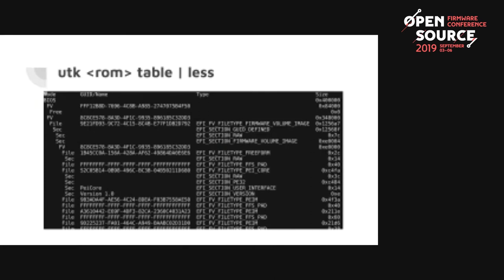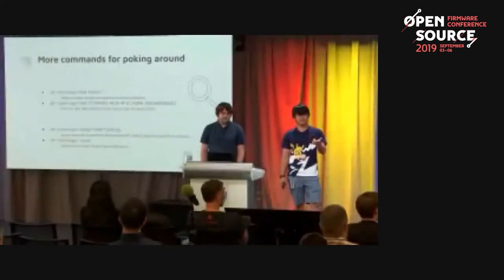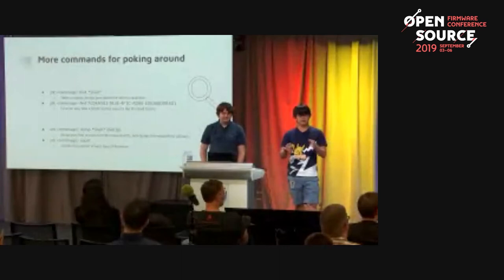For a closer look, you can say 'UTK image find shell' — it takes a regex and dumps JSON about the struct in question: the GUID, the size, the name, whether it has a UI section. You can also pass it a GUID directly, since sometimes UEFI DXE drivers don't have labels — they just have a GUID — so you can use the GUID to find them.